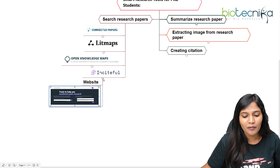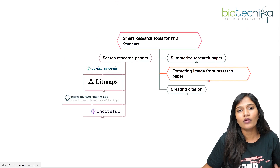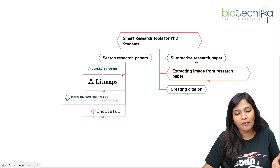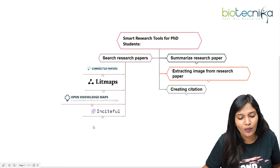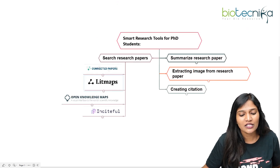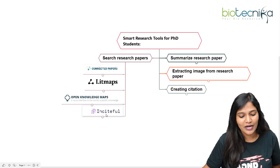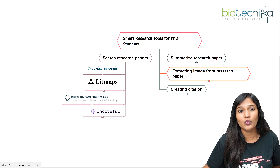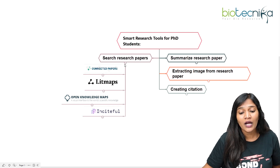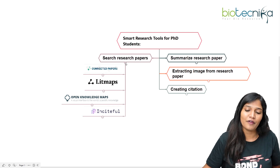So when searching for research papers, you don't always have to go to PubMed. Instead, you can use Connected Papers, Litmaps, Open Knowledge Maps, or Insightful — all of which make your search faster.